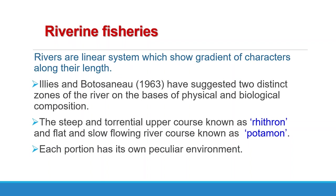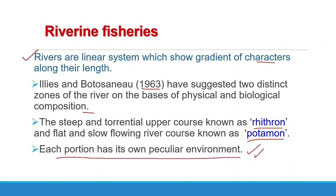Rivers are linear systems which show a gradient of characters along their length, so as the character of the river changes, the type of fish fauna found in it also changes. The longitudinal profile of a river is concave, with a steep upper portion near the source giving way to reaches of progressively less gradient as the mouth is approached. Illies and Botosaneanu in 1963 suggested two distinct zones of the river on the basis of physical and biological composition: the steep and torrential upper course known as Rhithron, and the flat and slow-flowing river course known as Potamon.